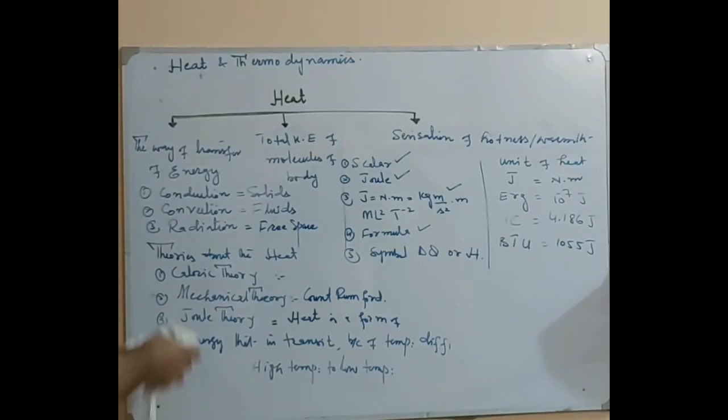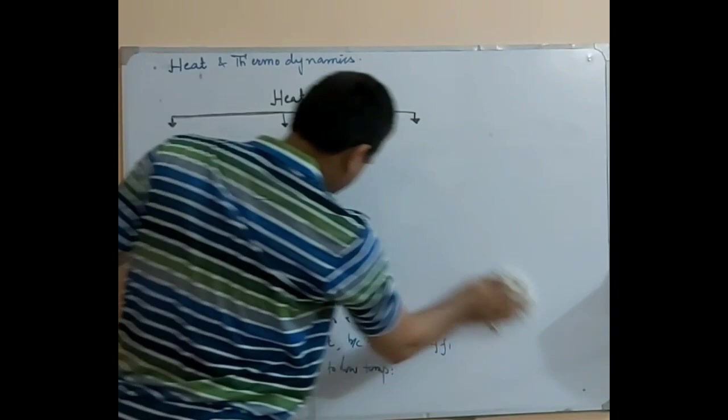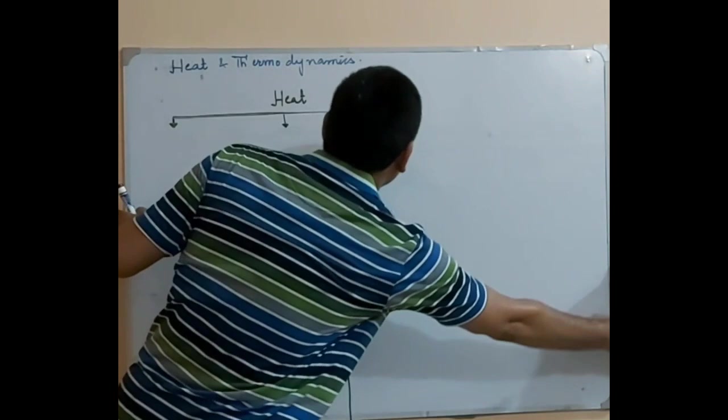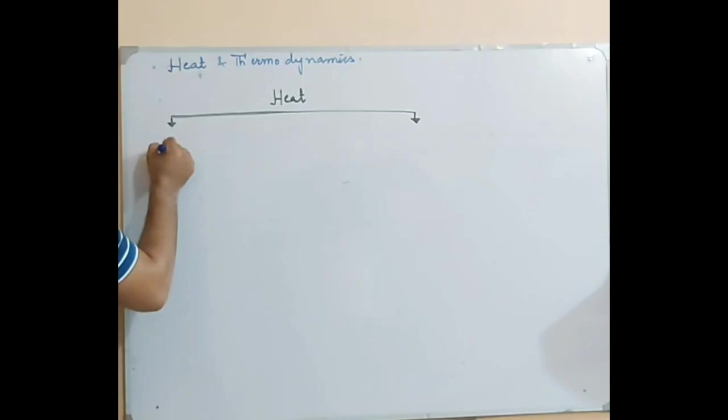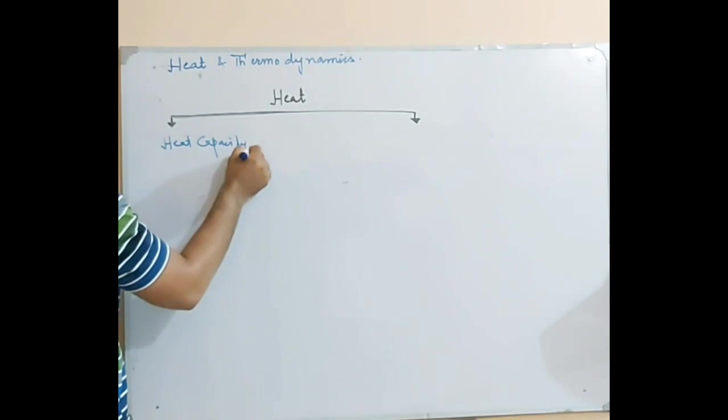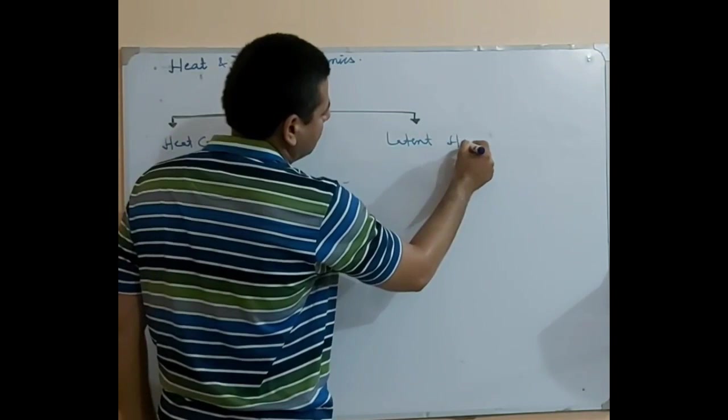Heat flows from high temperature to low temperature — from hot body to cold body — until thermal equilibrium occurs. When temperatures become equal, the heat flow will stop. Now we will talk about the types of heat: heat capacity and latent heat.